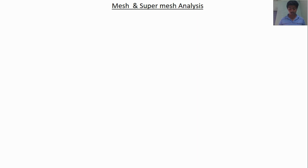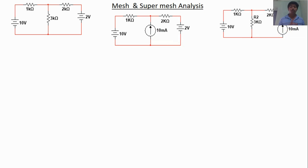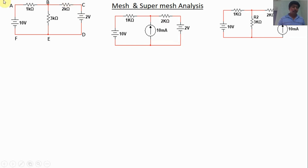For concept understanding, I am going to solve three types of problems. In Type 1, there is no current source. In Type 2, there is a current source in between the two loops. In Type 3, there is a current source in loop 2. If you know these supermesh concepts clearly, you can solve all three types of problems.